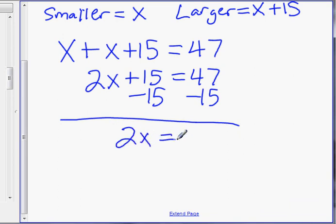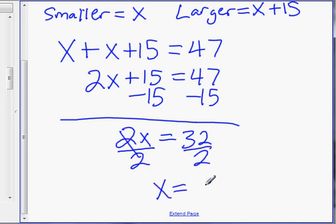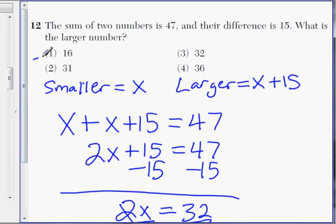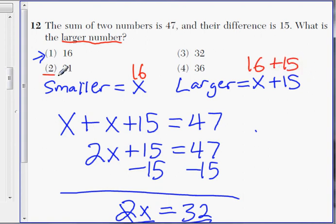Two x equals thirty-two. Divide by two, and x equals sixteen. Now you might think sixteen is the answer — and choice one gives you that — but a lot of people make the mistake of choosing sixteen right away. If you read the question carefully, it's asking for the larger number. Sixteen is actually your smaller number. The larger number is sixteen plus fifteen, which is thirty-one, choice two. So look out for that, be careful, and go over your answer before you move on.